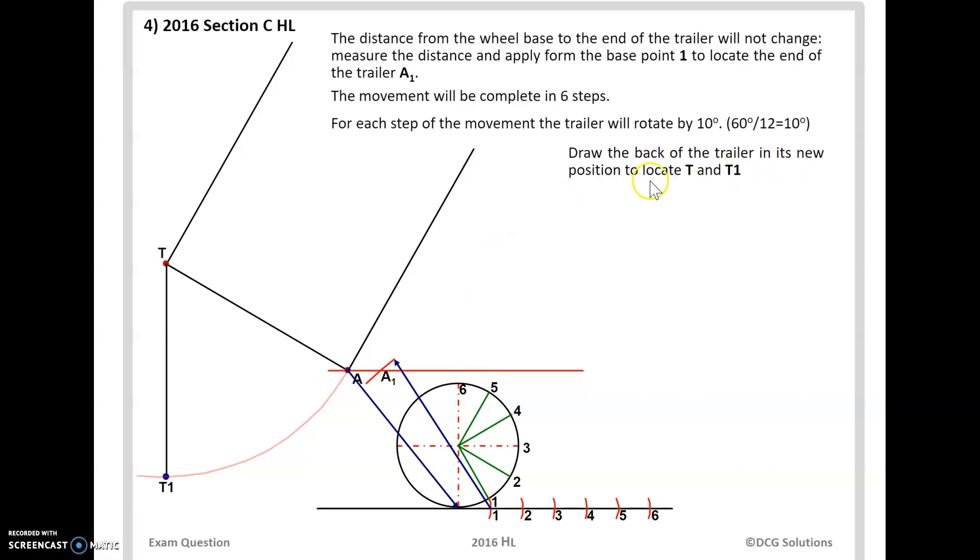All right so draw the back of the trailer in its new position to locate T T1. So if it's remember I said that was 30 degrees TA. So this one here it's going to be 10 degrees more so it's going to be at 40 degrees. We know the distance from T to A but we don't know what angle it's going to be at. 40 degrees and we have the distance from TA that we're going to mark off there. And once we know where TA is we know the length distance from T to T1. We have that length and we know that it's going to be vertical.